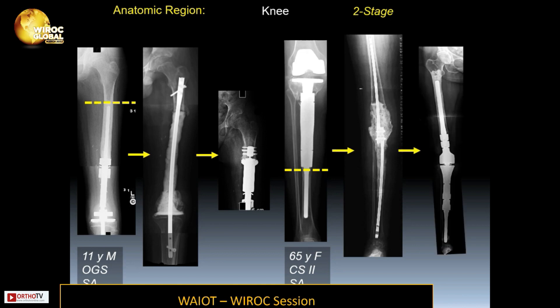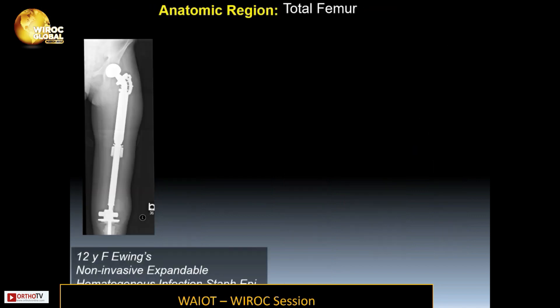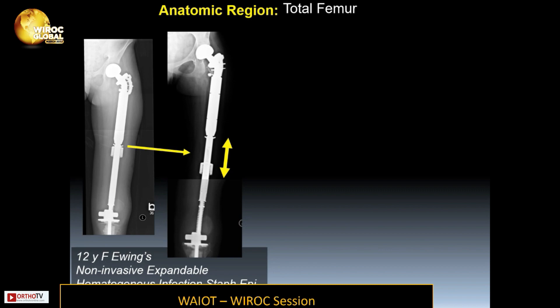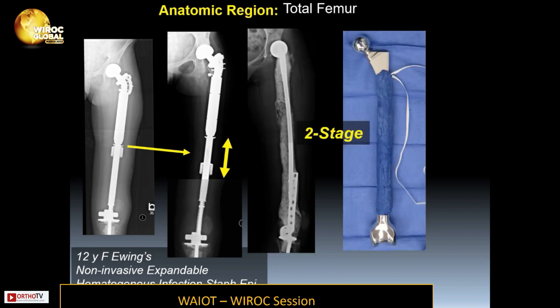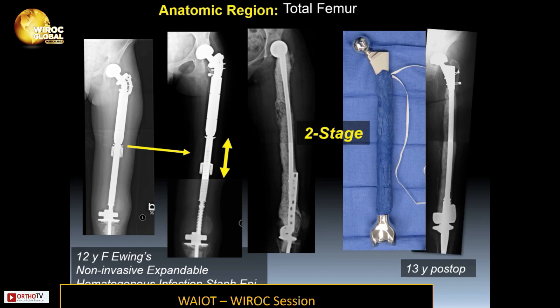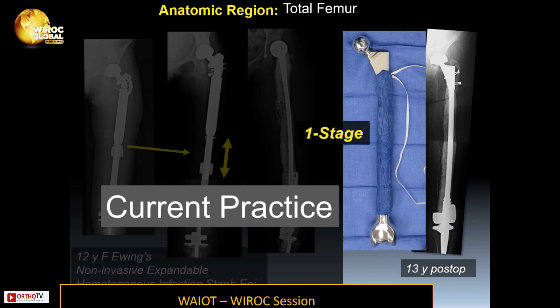The adult patient was treated with a long stem distal femoral proximal tibia replacement. Another case involved an expandable total femur replacement that became infected and was treated with a two-stage total femur endoprosthetic construct using antibiotic cement, then reinserted with a permanent implant with antibiotic cement. The current practice is to perform this as a one-stage procedure.